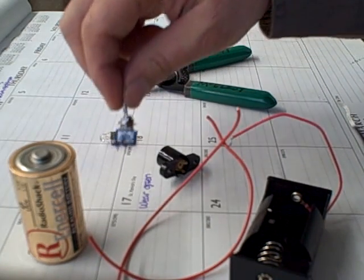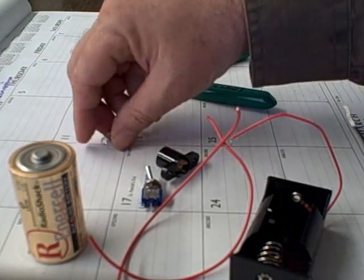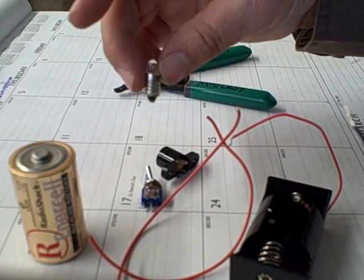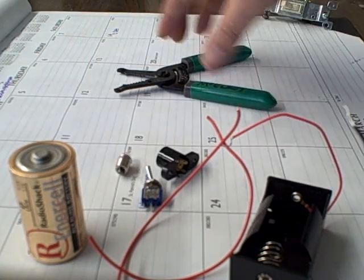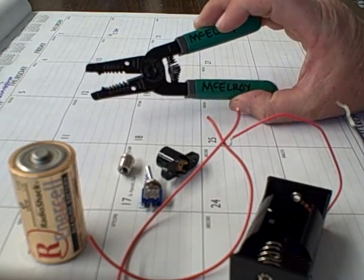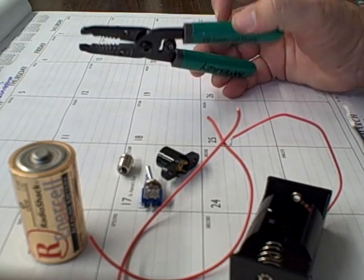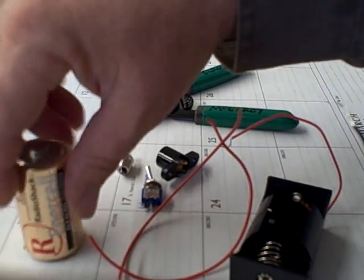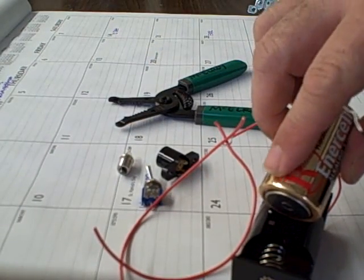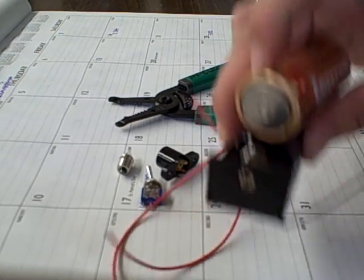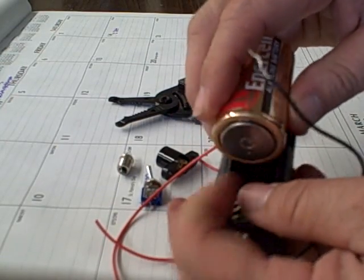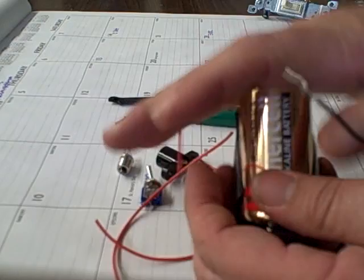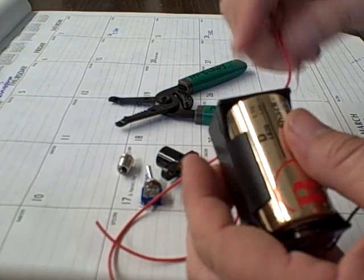I have a small toggle switch and I also have my light bulb that I'm going to put in the socket. And then to make it a little bit easier, I have a pair of wire strippers. Now the first thing I'm going to do is take the battery and put it inside the battery holder here so I have my power source.